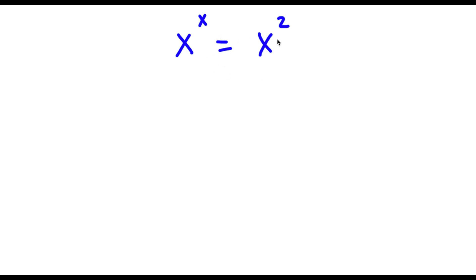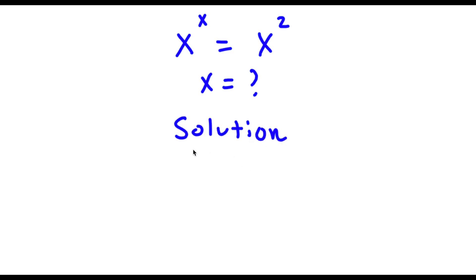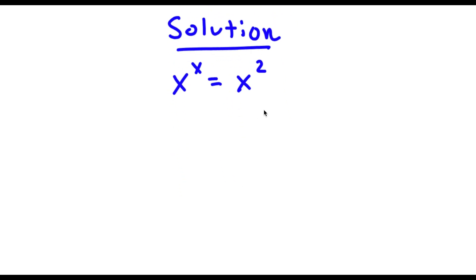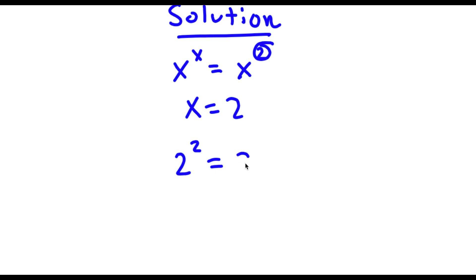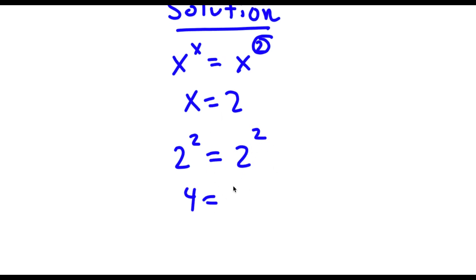Alright, so I have x to the power of x is equal to x to the power of 2, and I want to find the value of x. A very obvious solution to this would simply be 2, because we already have 2 over here and these two are going to be the same. So x equals 2 is an obvious solution because if I plug this in I get 2 to the power of 2 is equal to 2 to the power of 2, which is 4 equals 4.